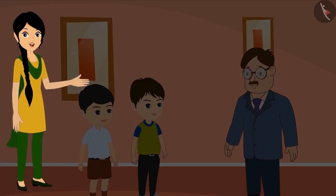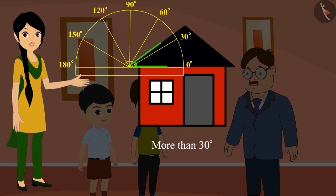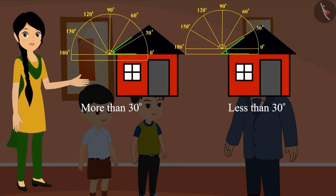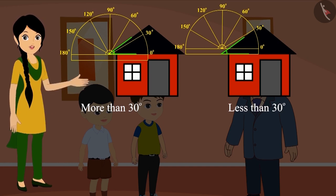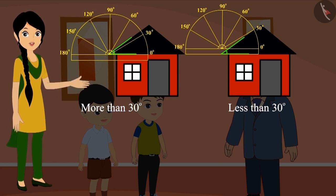Golu and Bholu showed their uncle the measurements of the angle. This time Bholu's measurement was more than 30 degrees and Golu's measurement was less than 30 degrees. Can you tell which answer is correct? If you want you can pause the video here and think for a while.